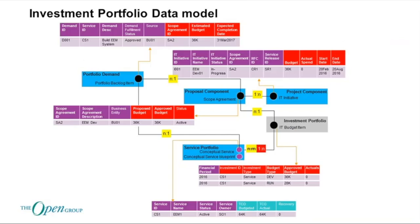You build up a proposal — a scope agreement — and based on that you can get 36k for the next version of the project. We also want budget allocated for running this service at 28k, and that is now being tracked across all components as something that is budgeted and approved. First it's budgeted, then it gets approved, and when its status is active, that implies we're actually developing it right now.